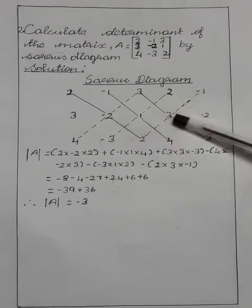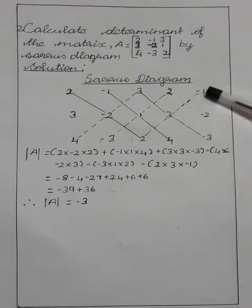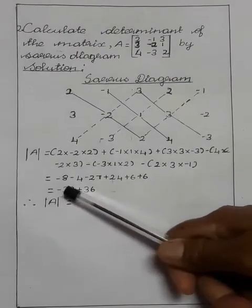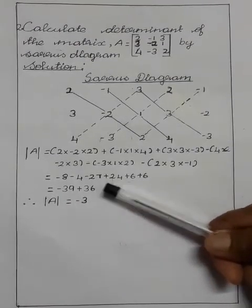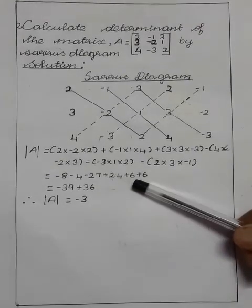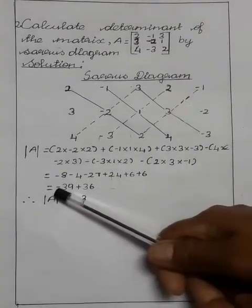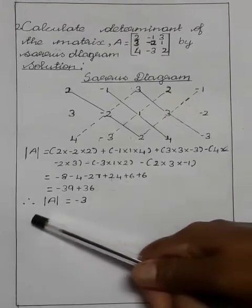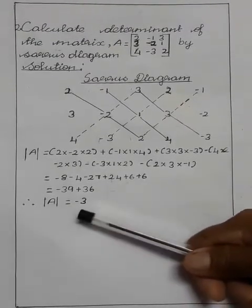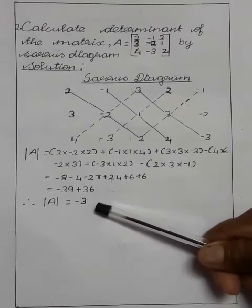Is equal to minus 8 minus 4 minus 27 plus 24 plus 6 plus 6 is equal to minus 39 plus 36. Therefore, determinant of A matrix is equal to minus 3.